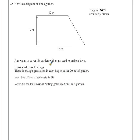So we have a multiple stage problem here. We need to know what the area of his garden is, how much grass he has. Therefore, we can work out how many bags of grass seed he'll have to buy to cover that lawn. And when we know how many bags we have to buy, we can work out what it costs.